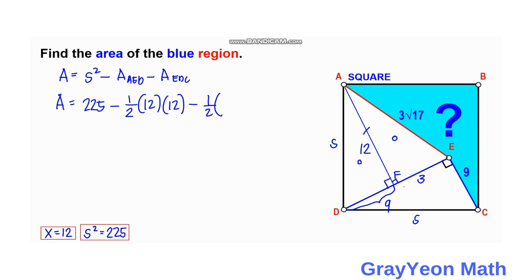So minus one half times, for EDC, you can choose any to be the base, any of the legs and the other is the height. So if we choose the base as 9 and the height is 12, so that will be the area of this triangle.